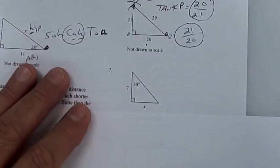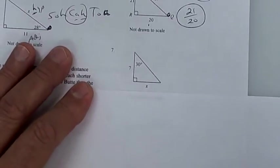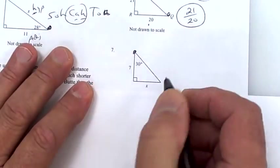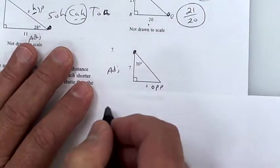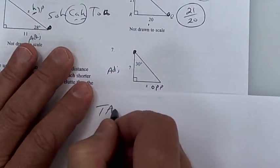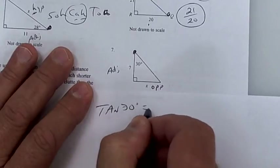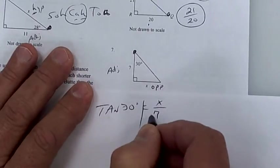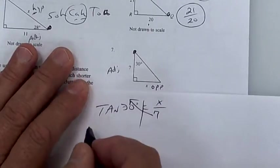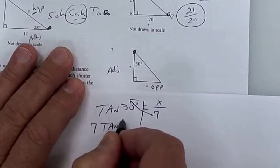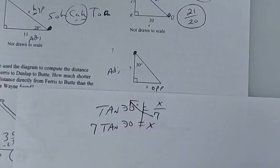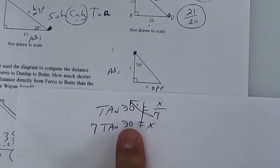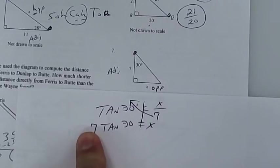The next one is just basic stuff. Put a dot right here. This one is opposite, this one is adjacent — therefore it's tangent. So it's the tangent of 30 degrees is equal to opposite over adjacent. Multiply by 7 and you have your answer. Make sure you work backwards — press 30, tangent, and then times 7.